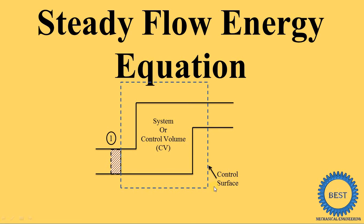It is the control surface we consider. This is section 1, which is the inlet section — here the fluid comes in. These are the various inlet parameters: U1, P1, V1, C1, and H1.